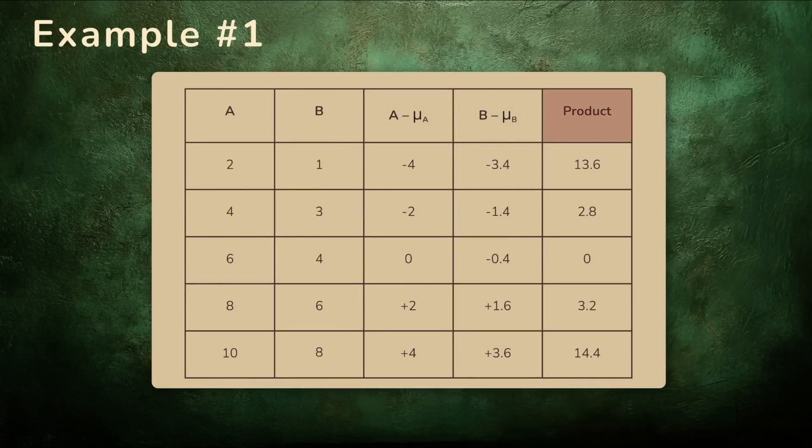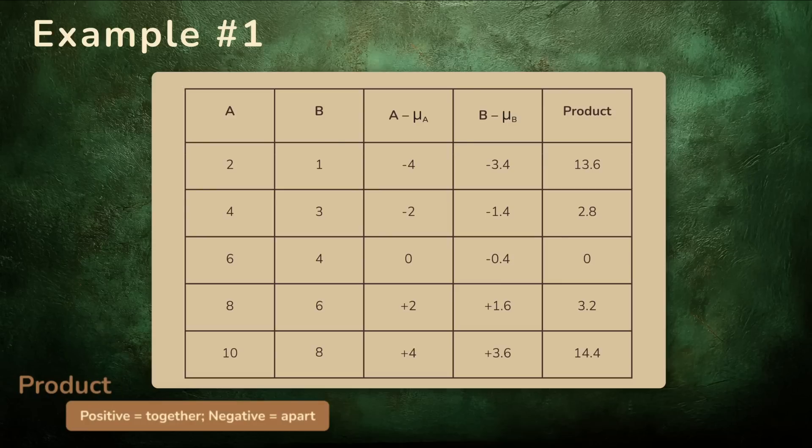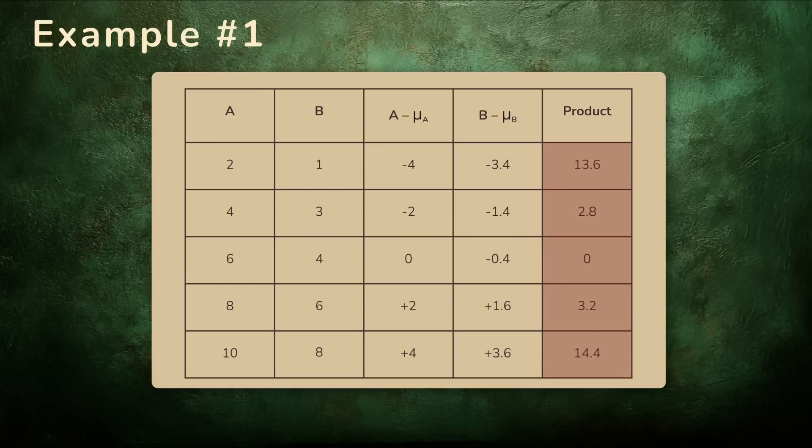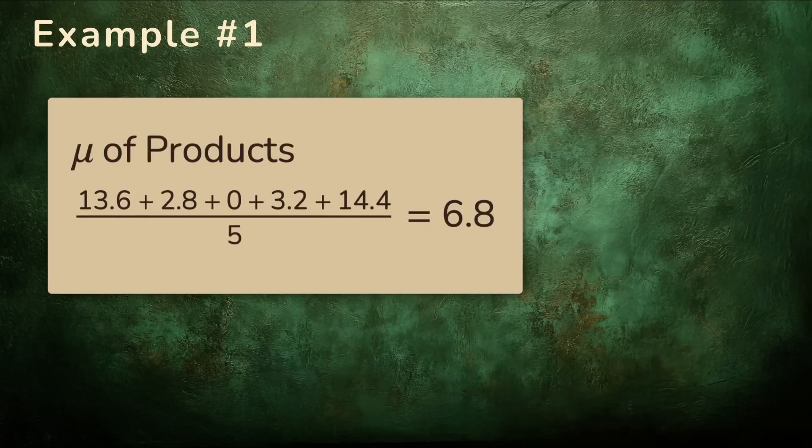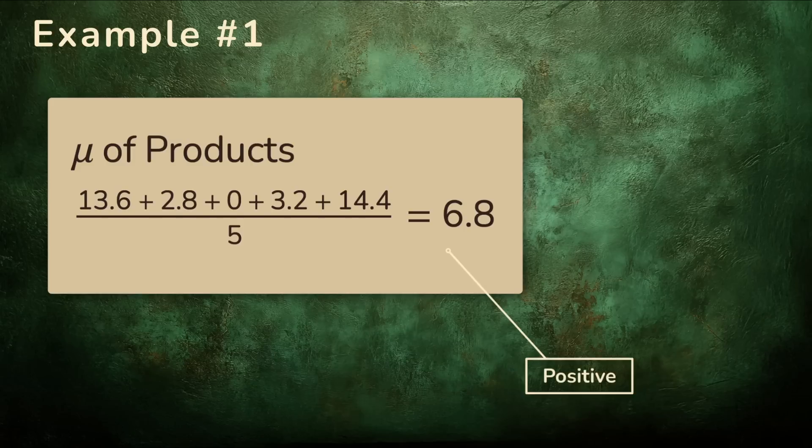Each product tells us something about how that pair moves. If the product is positive, they move together. A negative product means they move apart. There's not a single negative product in this data set. Makes you think, doesn't it? And lastly, take the average of the five products. Our covariance for the two data sets is 6.8. Positive 6.8. It tells us A and B tend to rise and fall together.